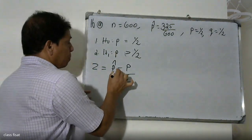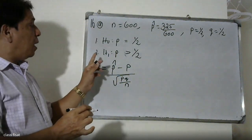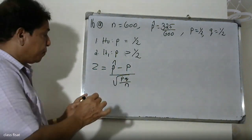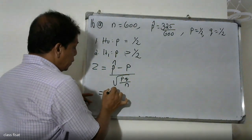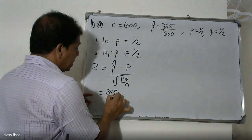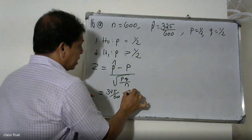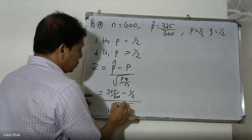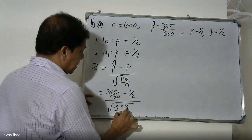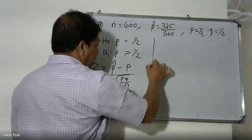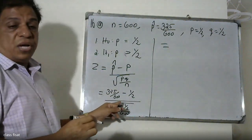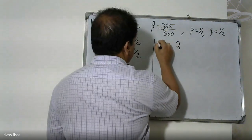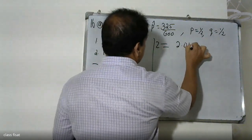Substituting the values — 325 divided by 600 — into the formula, the calculated z-value comes out to approximately 2.041.